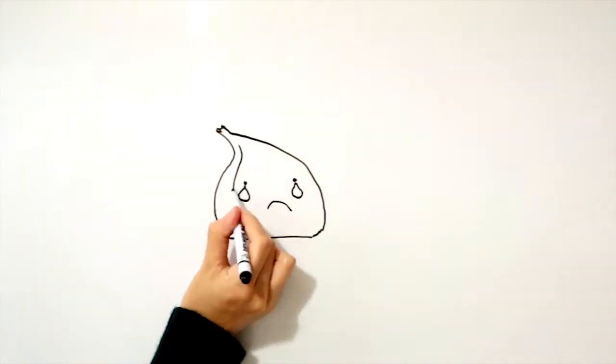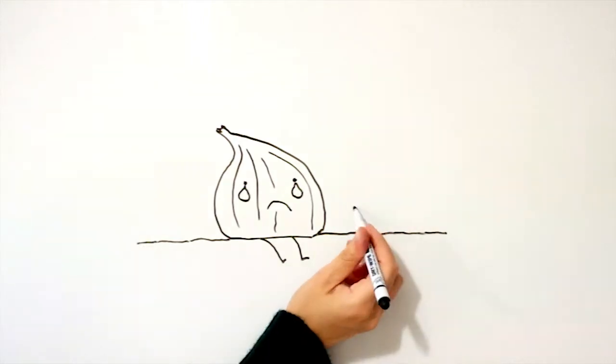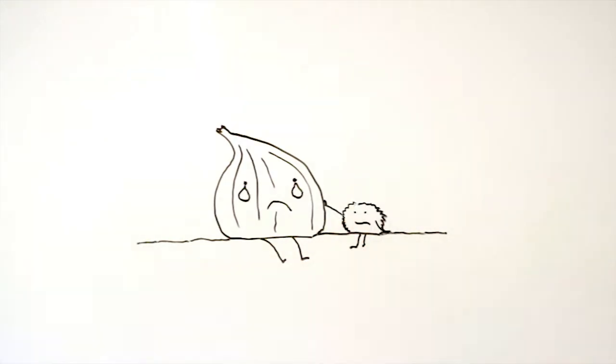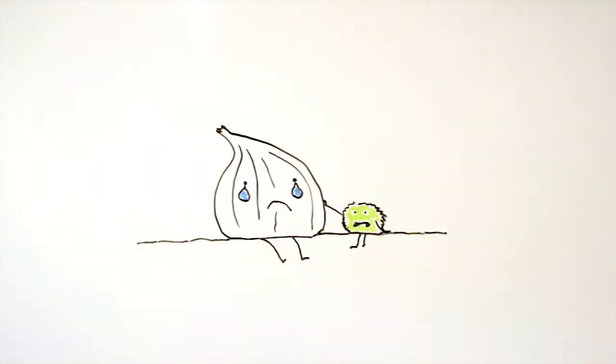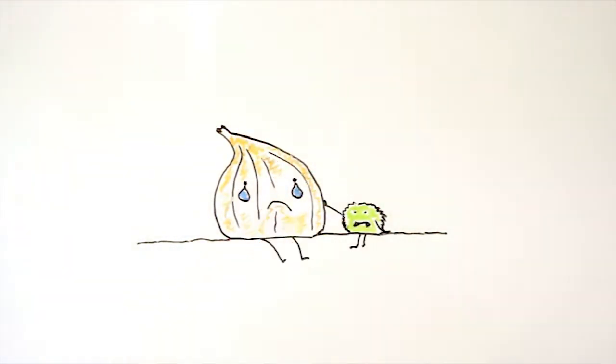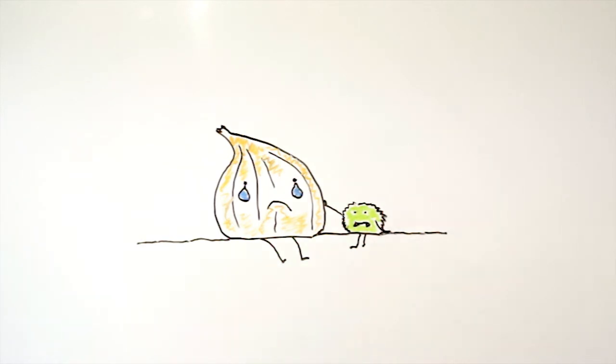Propanethiol S oxide is a known lachrymatory agent, which means it stimulates the production of tears. But there is more. This chemical is unstable, and upon contact with the water in your eyes can be converted into sulfuric acid, which is an irritant and causes the eyes to sting and tear even more.